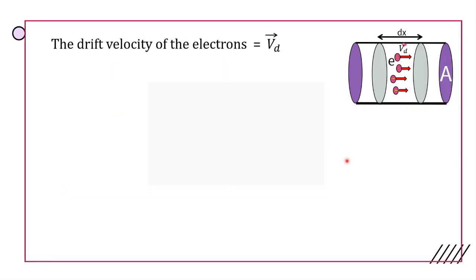The drift velocity of electrons is Vd. The number of electrons crossing dx at time dt, where dx is the distance and dt is the time.